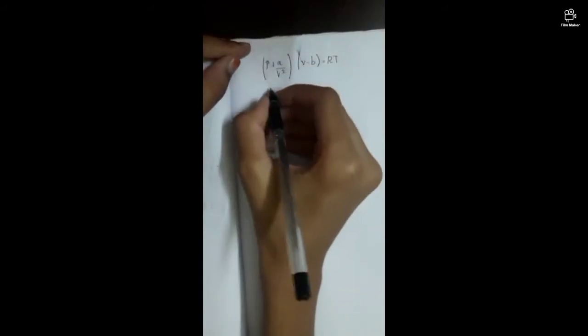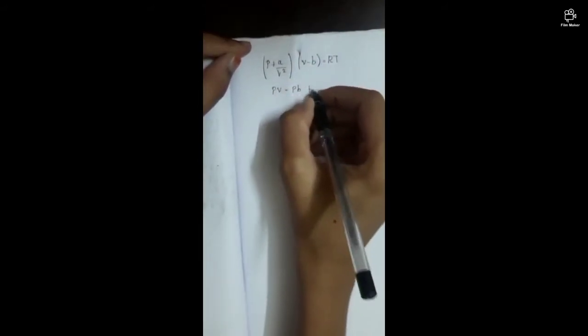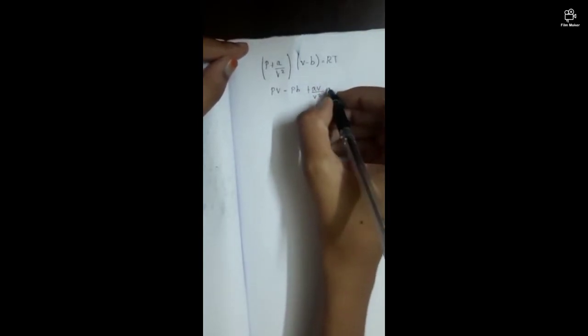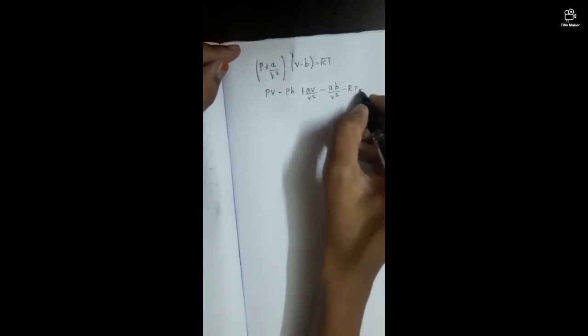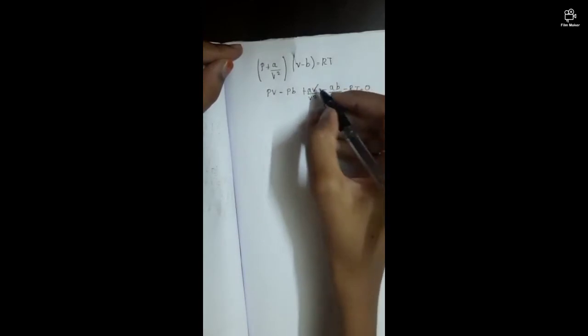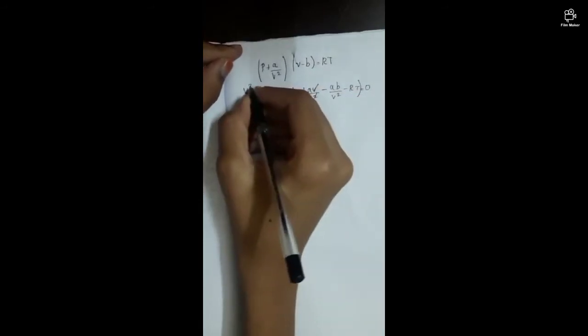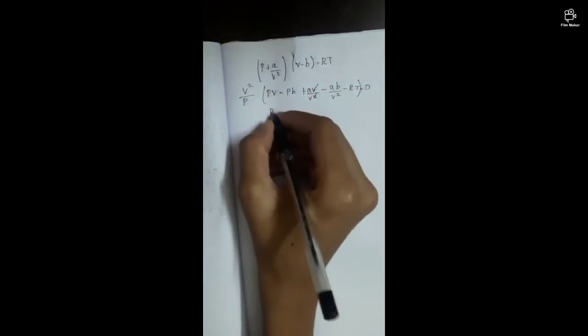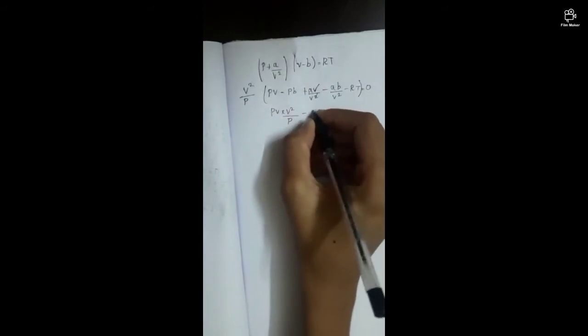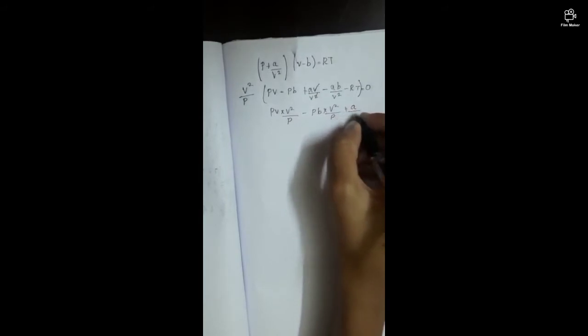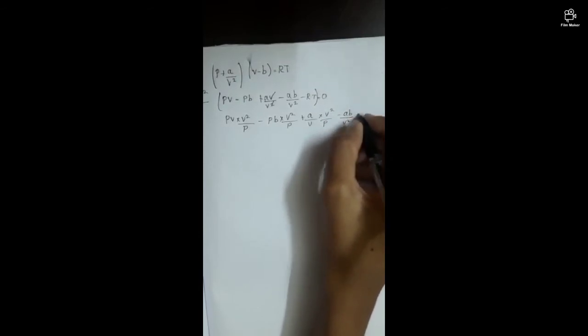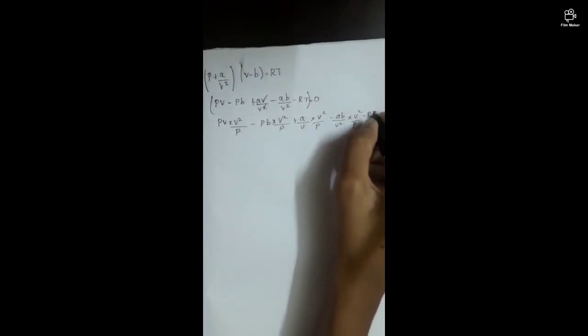We expand the equation by multiplying out: pv - pb + av/v² - ab/v² - RT = 0. Then we multiply through by v²/p to get: v³ - bv² + av²/(pv) - ab/p - RTv²/p = 0.